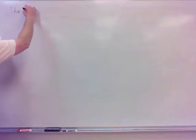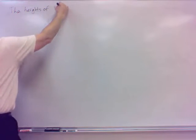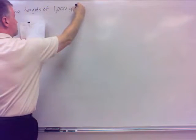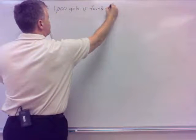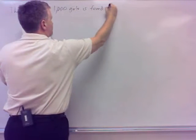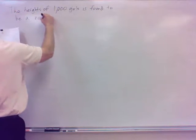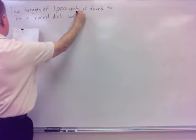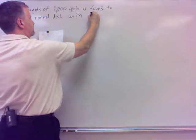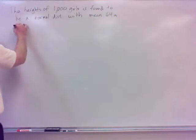The heights of a thousand girls is found to be a normal distribution with a mean of sixty-four inches and standard deviation of two inches.